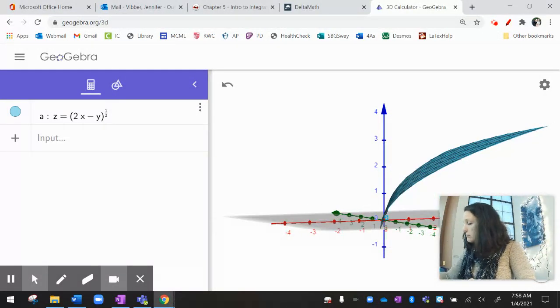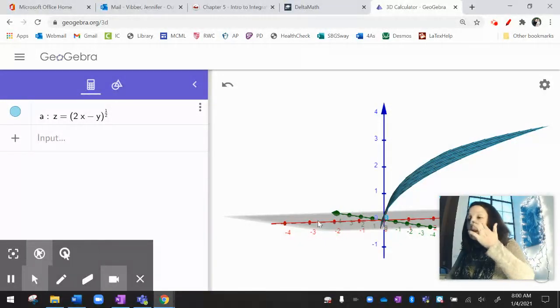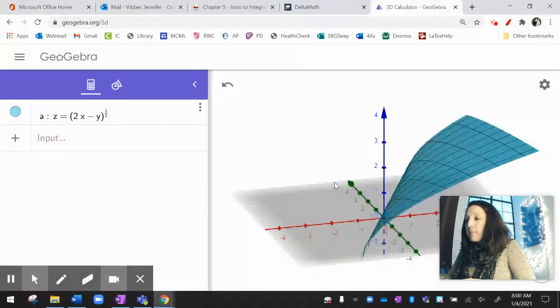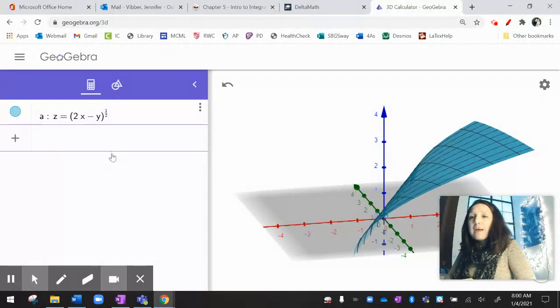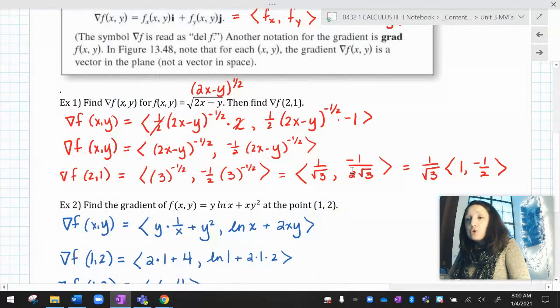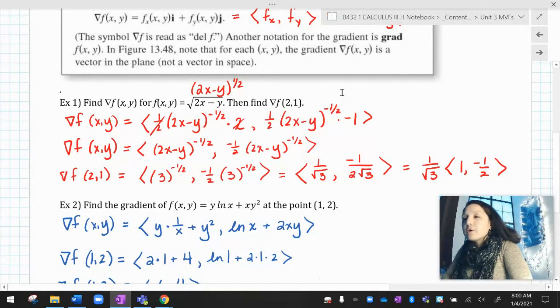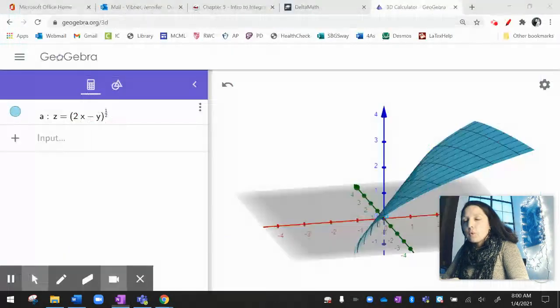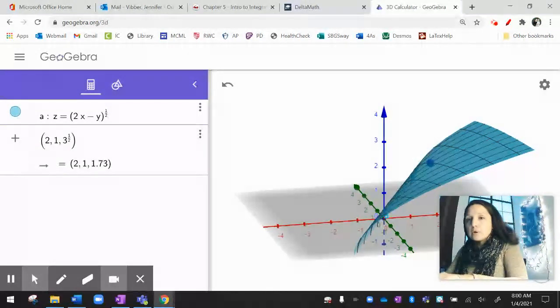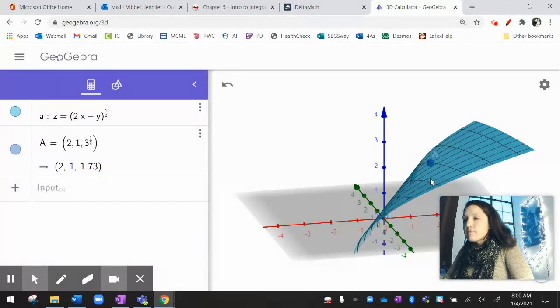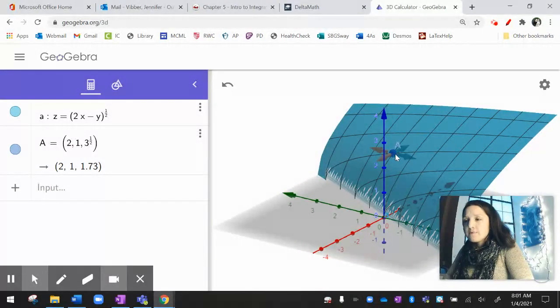So z equals the square root of 2x minus y. And I get this thing. Cool. So what am I going to do with this? Well, so if I look at this here, what I have is this happy little graph. Now we were supposed to evaluate that graph at the point, let's see, 2, 1, and find the gradient vector. Well, let's see what that does. So if I evaluate this at just regular 2, 1, that's going to be the square root of 3. So if I find the point 2, 1, radical 3, there's that point on the graph.